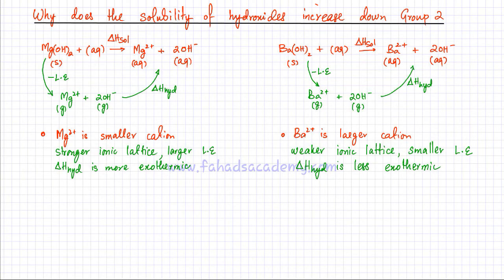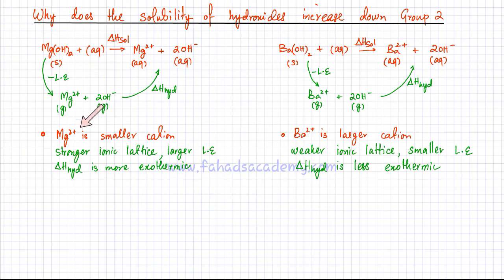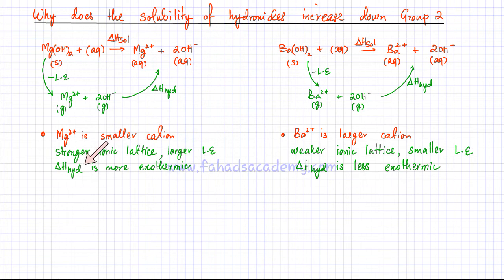I'm going to explain why magnesium hydroxide is not very soluble and barium hydroxide is more soluble. Mg²⁺ is a smaller cation — it's at the top of the group, has only two shells and 10 electrons, so it's a very small ion. Smaller cations are closer together in the ionic lattice, so there's more attraction and higher charge density, meaning lattice enthalpy is much bigger. When smaller cations form bonds with water molecules, those bonds are also stronger, so the enthalpy of hydration is also more exothermic.